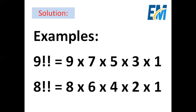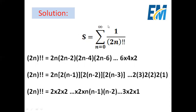Now let's start with s. s equals 2 times the summation from n equals 0 to infinity of 1 over double factorial of 2n. We will begin to simplify double factorial of 2n. So double factorial of 2n equals 2n multiplied by the next even number 2n minus 2, then 2n minus 4, then 2n minus 6, and so on, down to 6, 4, and 2.